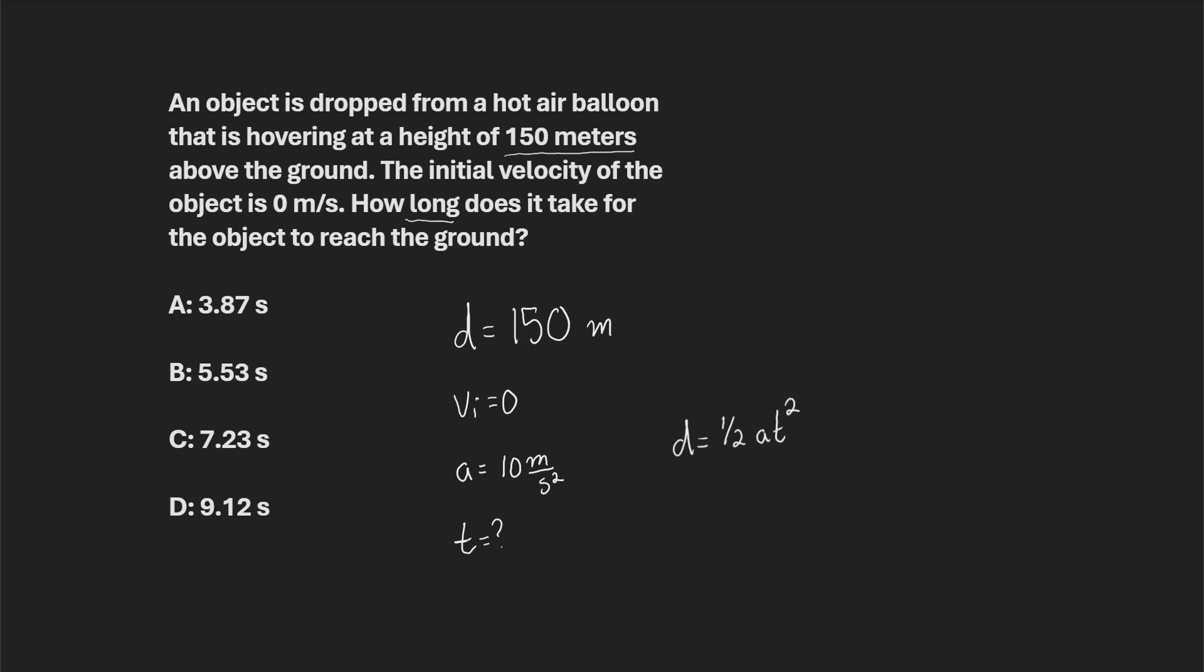And at this point, it's relatively straightforward. At this point, we just kind of got to plug and chug. So distance, 150, is equal to one-half 10t squared. And 150 divided by half, that's the same thing as multiplying it by 2, and that's 300.